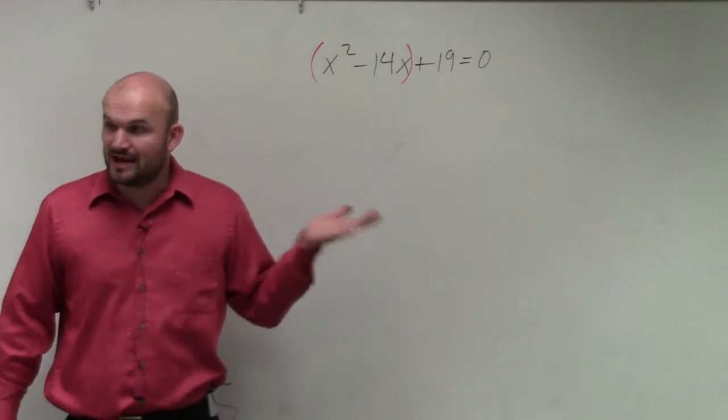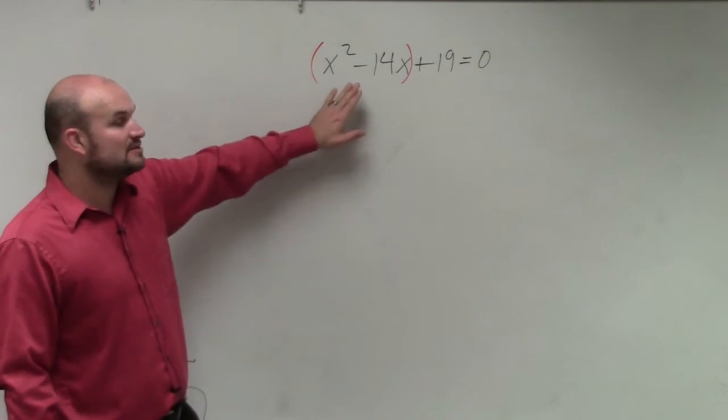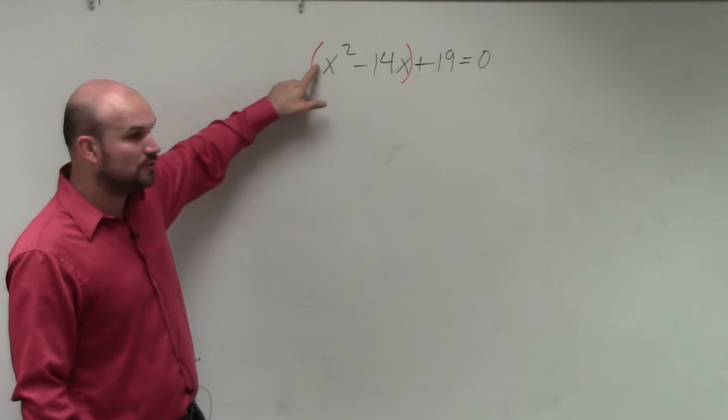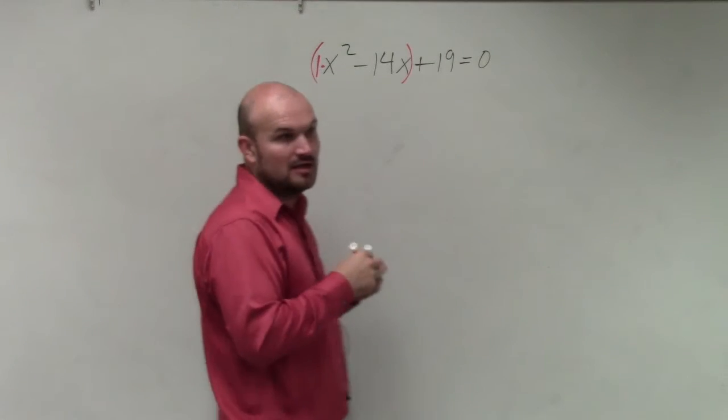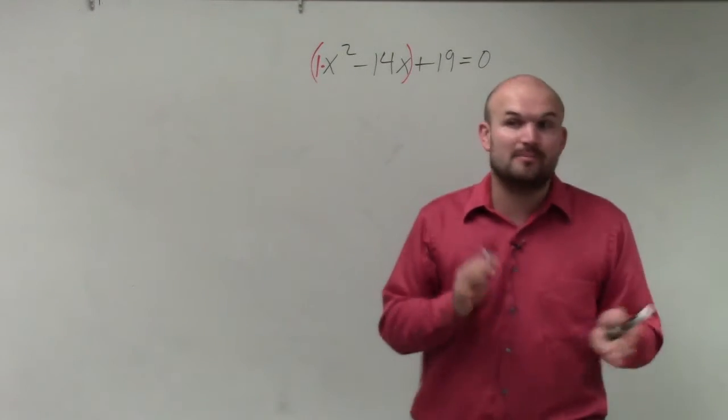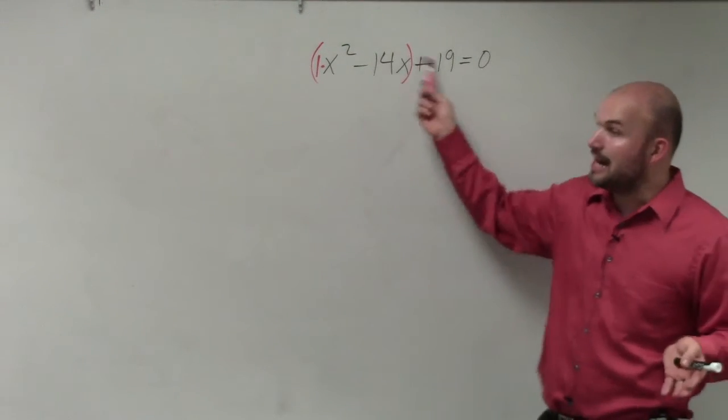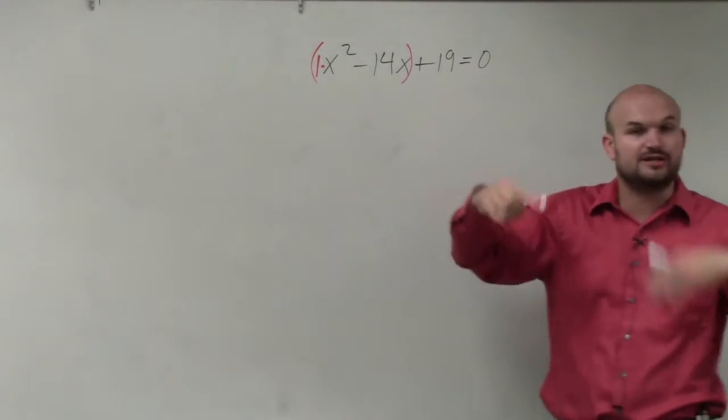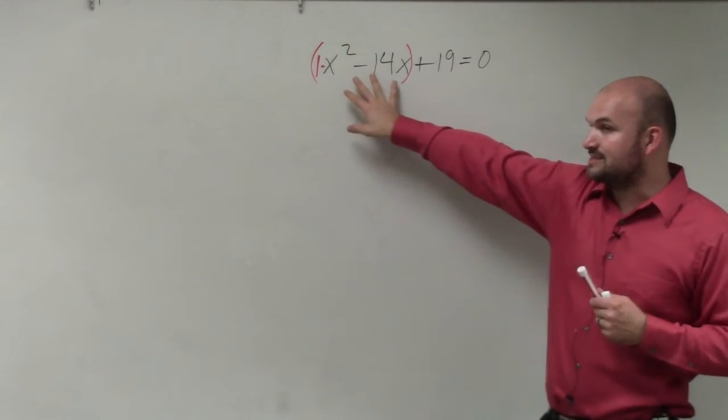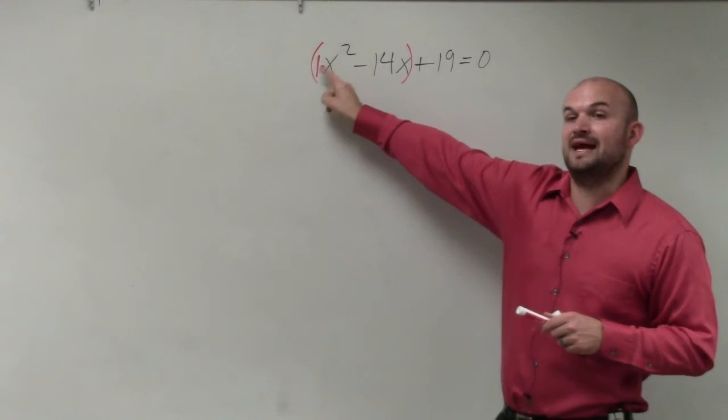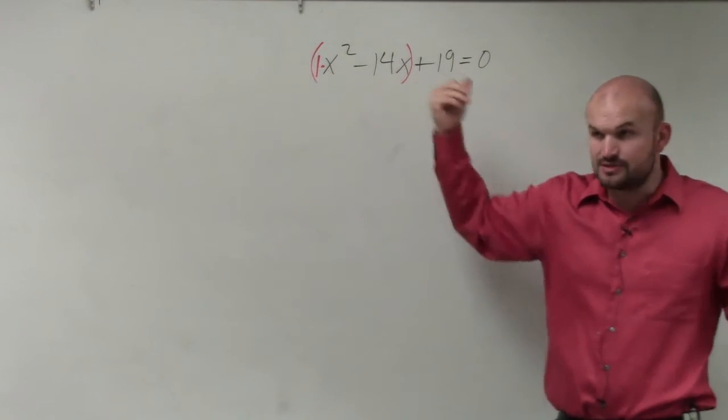The second step, which in this case we don't have to do, is to factor out a common factor so a is equal to 1. But you notice that there already is a nice little 1 there, so I don't have to factor out any number. Now remember, even though I know x's are common, we don't need to factor out the x because we're trying to create a perfect square trinomial. So we're going to keep the x's in there, but we only want to factor out so a is going to be 1. But in this case, a is 1, so we're good.